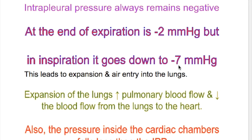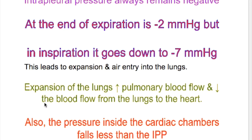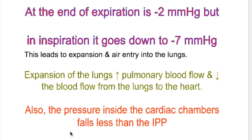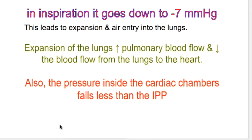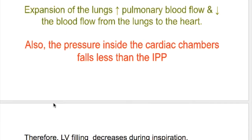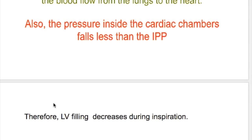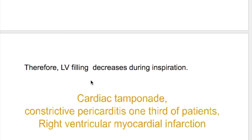Decreasing the intrathoracic pressure leads to expansion and air entry into the lungs. Expansion of the lungs increases pulmonary flow, so more venous blood goes to the lungs than to the heart, less blood from the lungs goes to the heart, and the pressure inside the cardiac chambers falls less than the intrapleural pressure. Therefore, left ventricular filling decreases during inspiration.